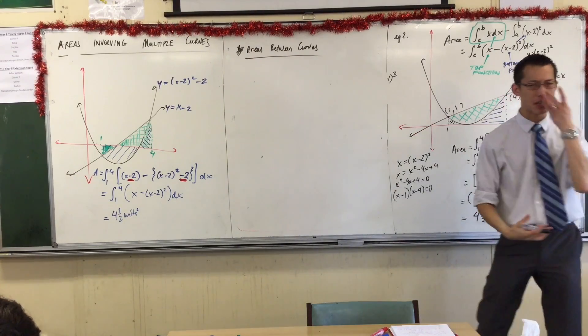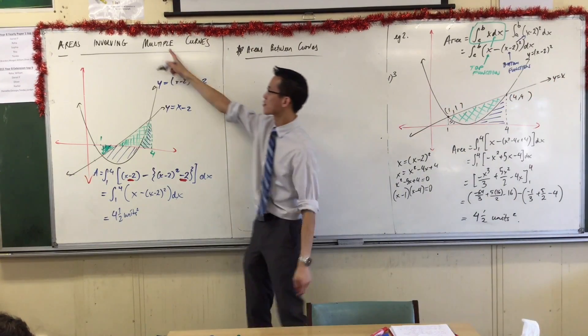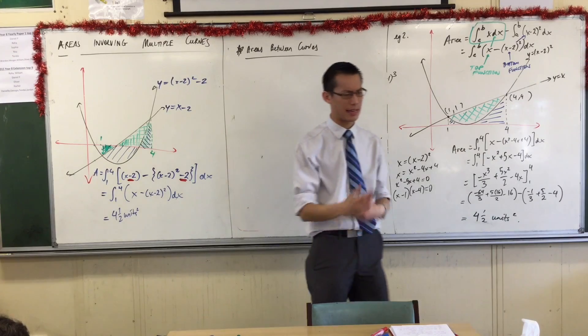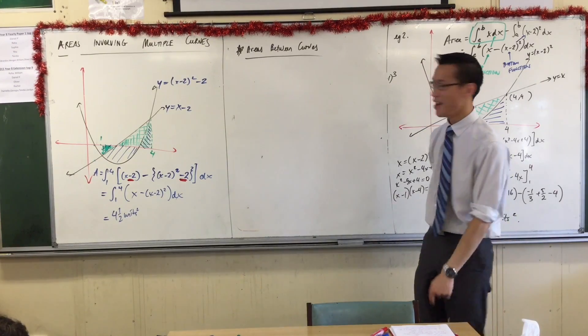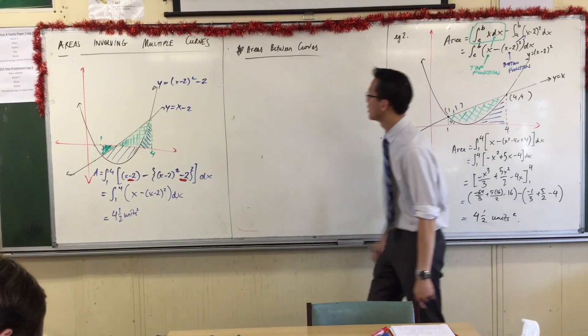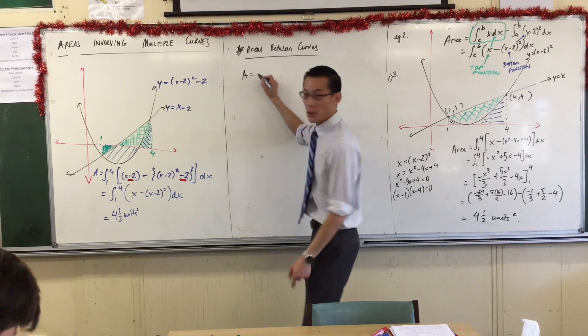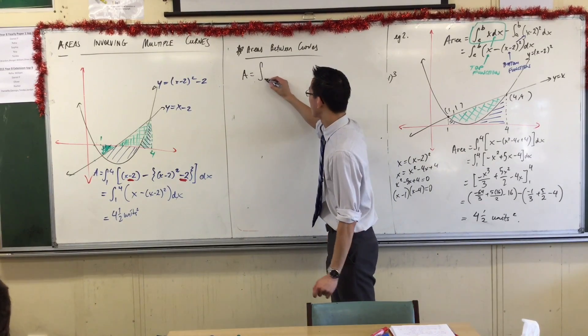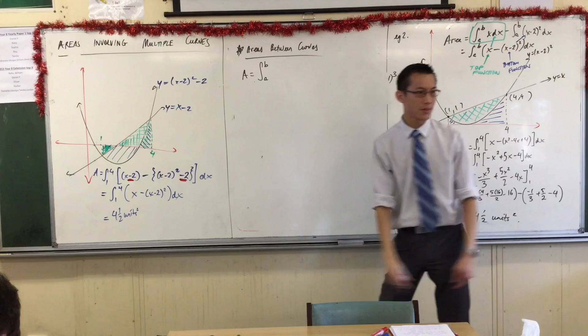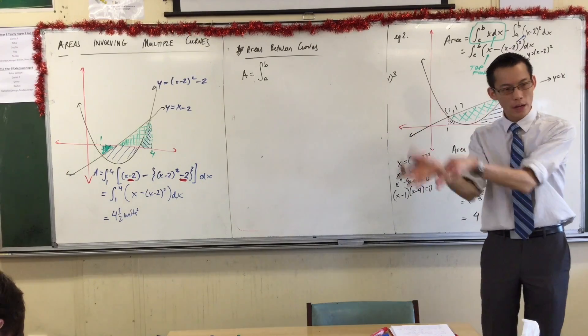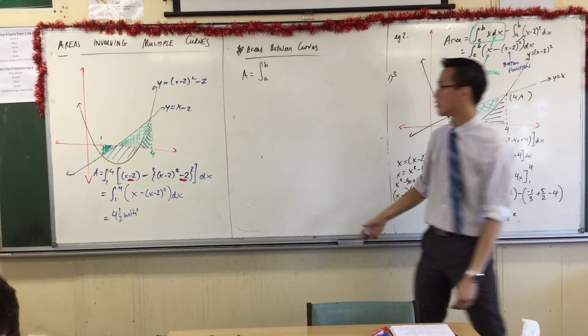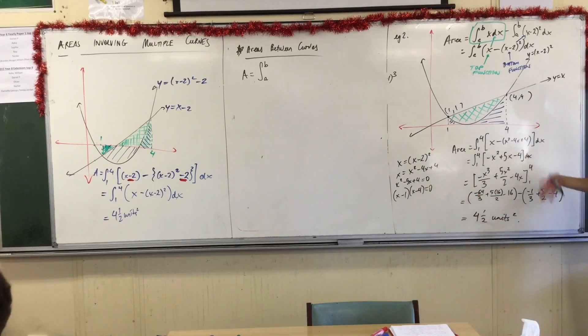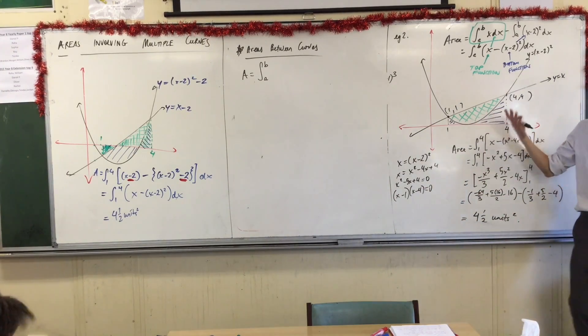So areas between curves are one instance of what happens with multiple curves. They don't have to be between, like in the very first example I showed you this morning, but very frequently they are between. The area is going to be equal to the integral from A to B of one function, take away the other.